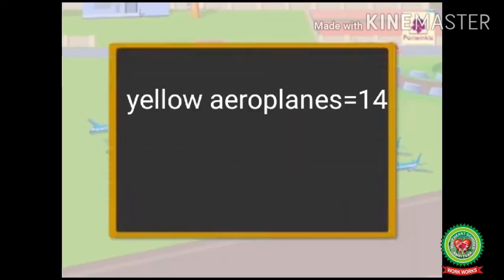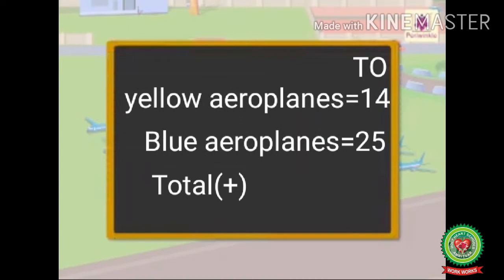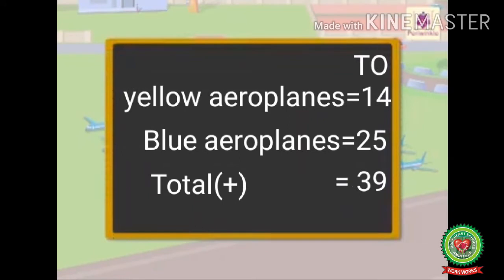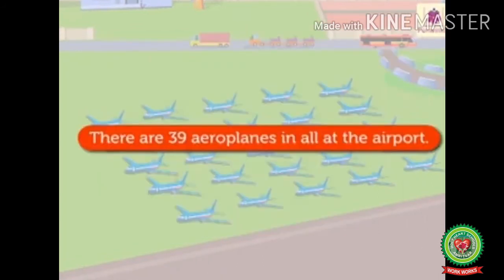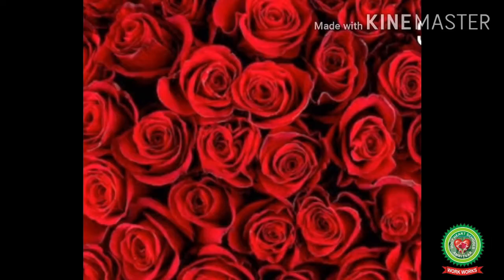Now let us solve it. Yellow airplanes equals 14. We will write the place value chart with ones and tens. Blue airplanes equals 25. Then we write 'total' and put the plus sign in the bracket. Now 4 plus 5 is 9, and 1 plus 2 is 3, so the answer is 39. There are 39 airplanes in all at the airport.